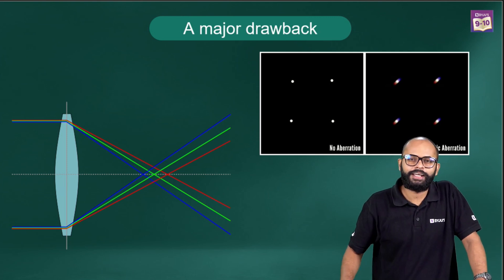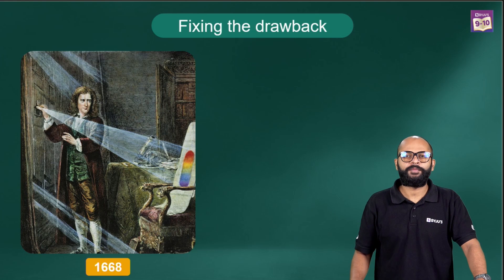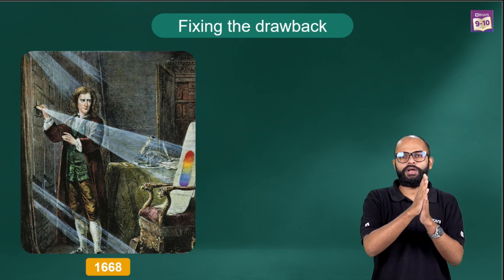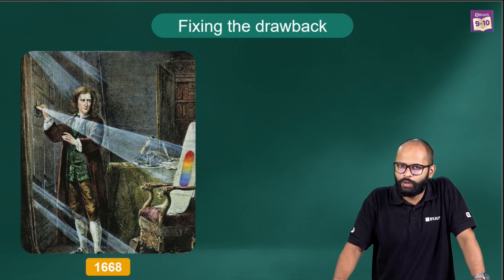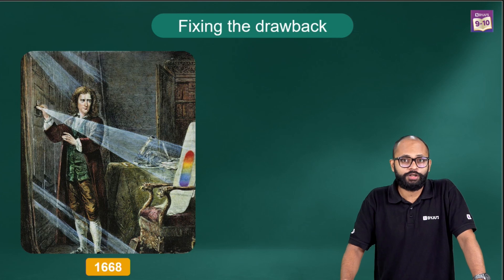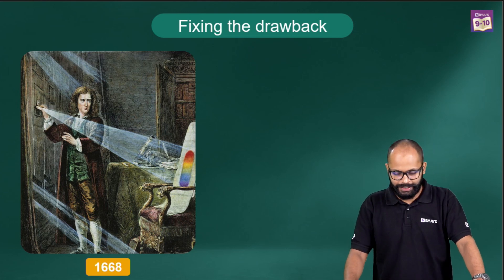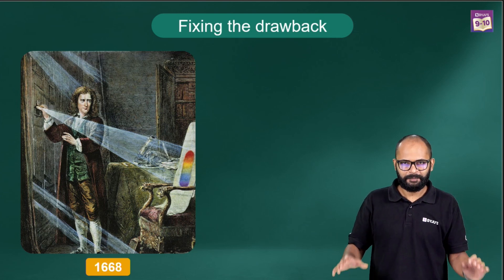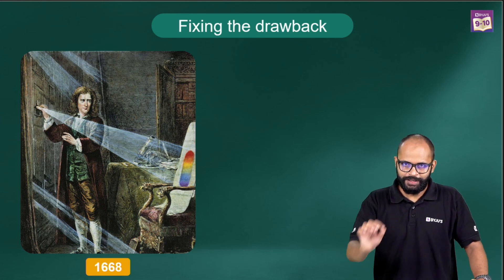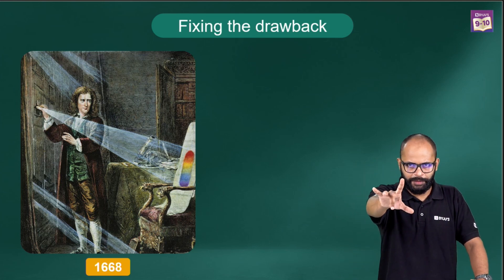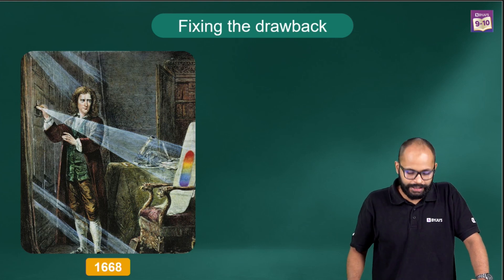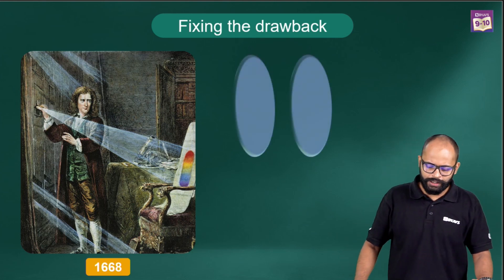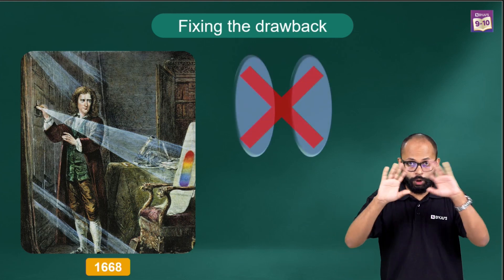Newton came into the picture 60 years later. Newton said, let's make some changes. What if I don't use a lens? What if I can still make a telescope and not use a lens? Instead, I'll use a mirror. That's where the reflecting telescopes came into picture. Today, reflecting telescopes are ruling the world. It was Newton who brought this in 1668, almost 60 years after Galileo.